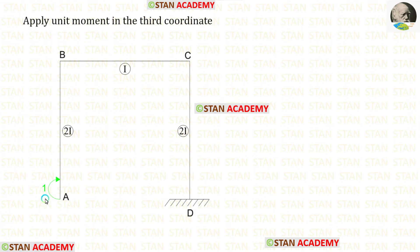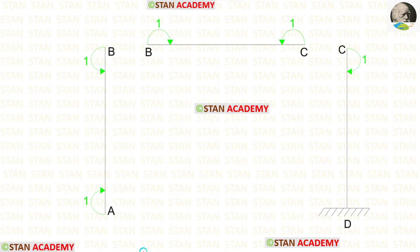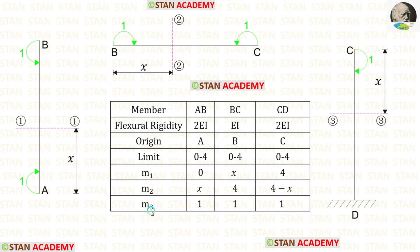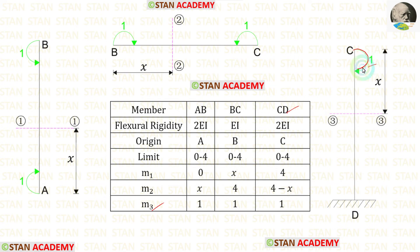Now let us apply a unit moment in the third coordinate and find M3. In the free body diagram, a unit moment is applied at point A clockwise. At point B an anticlockwise unit moment develops, then clockwise, then anticlockwise, then clockwise. For M3 in AB, BC, and CD: the unit moment acts clockwise in each segment, so M3 is positive throughout.